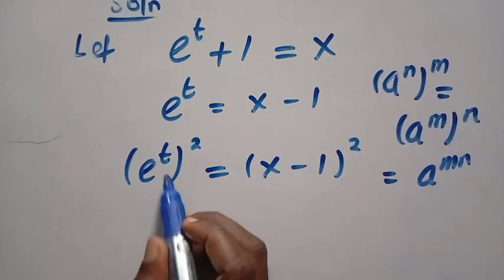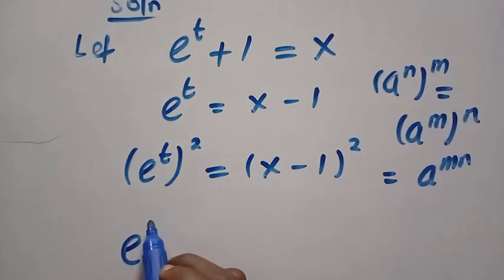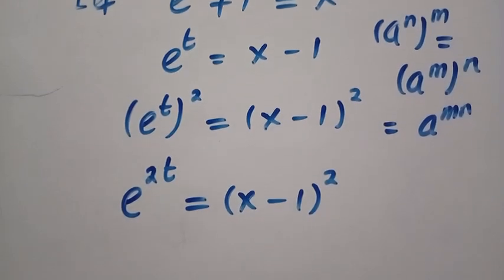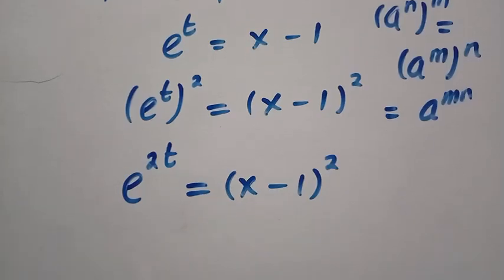So, applying it to this, we are going to have e^(2t) equals (x minus 1)^2. As we already have this, then let's replace everything back.